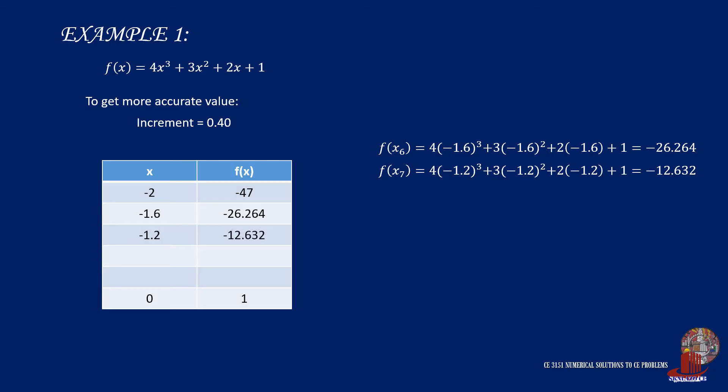Take another 0.4 interval, bringing the value of x to -0.80, f(x) is solved as -4.568. Then, by taking another increment, use x as -0.40, f(x) turns out to be -0.536.